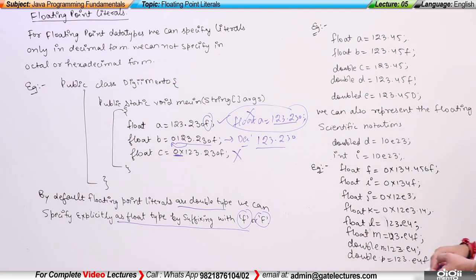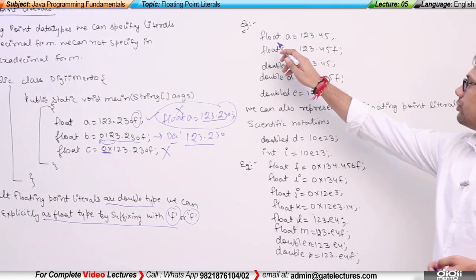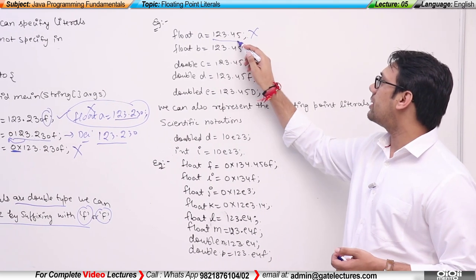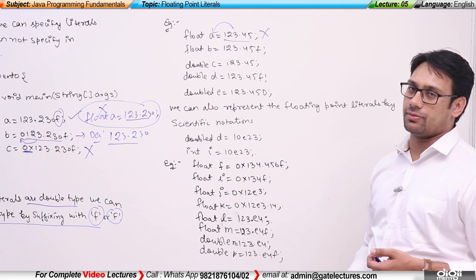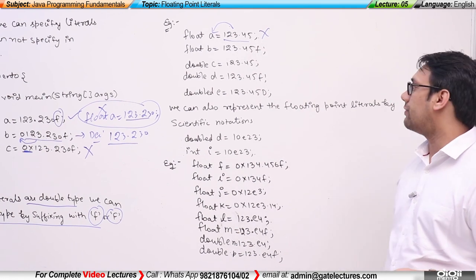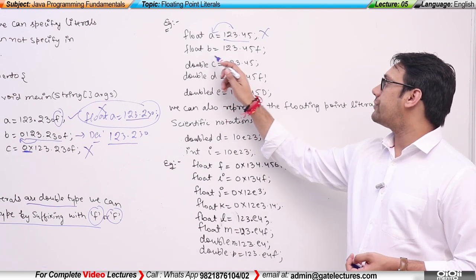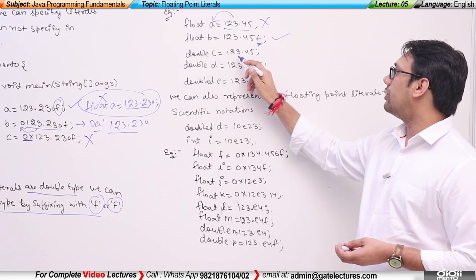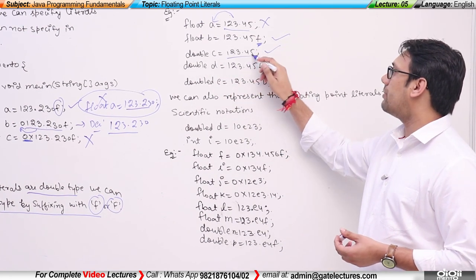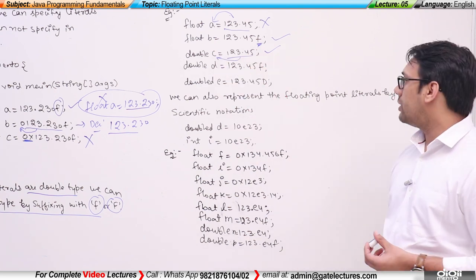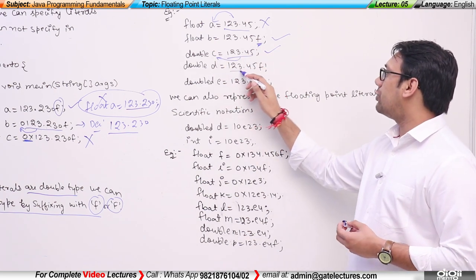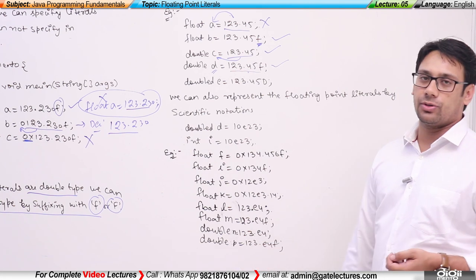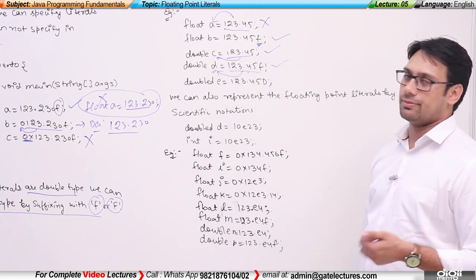Let us take these examples. In the first case, float a is equal to 123.45 — this is not valid because it will say 'possible loss of precision': this number is a double but you are storing it in a float variable, so it gives a compile-time error. But float a is equal to 123.45f is perfectly fine because of the 'f'. double c is equal to 123.45 is also fine because you are storing a double in a double. double d is equal to 123.45f is also valid because the size of double is bigger than float, so you can store a float in a double variable.